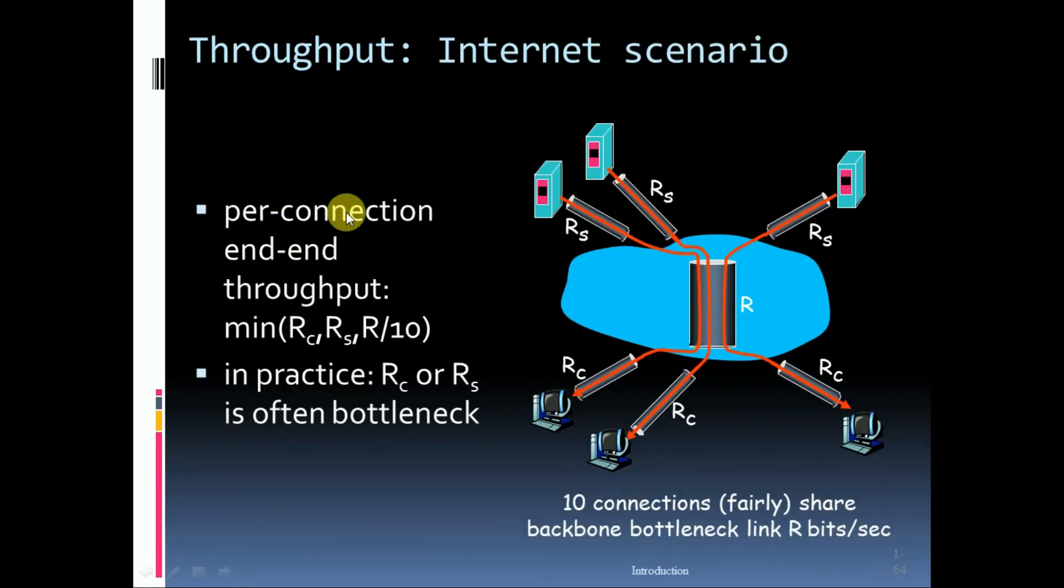In the internet scenario, here is Rs and Rc. So per connection end-to-end throughput minimum of Rc, Rs, R divided by 10. In practice Rc or Rs is often bottleneck.